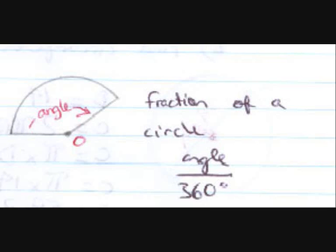And lastly, the angle. So the fraction of the circle is the angle divided by 360 degrees, which is the full circle.